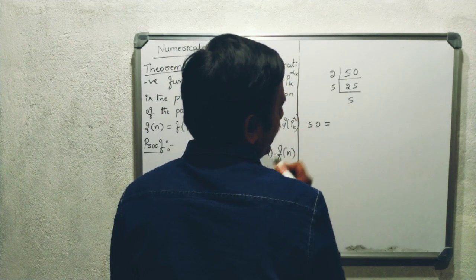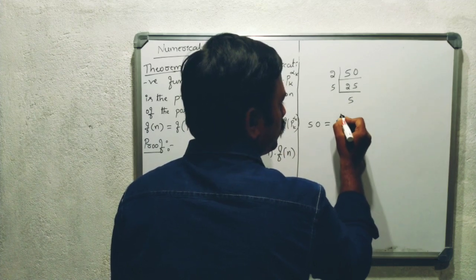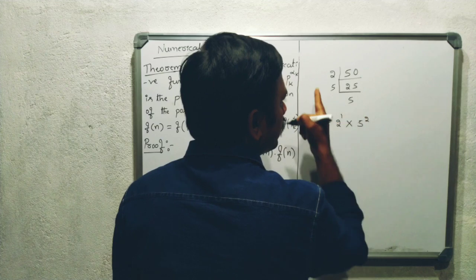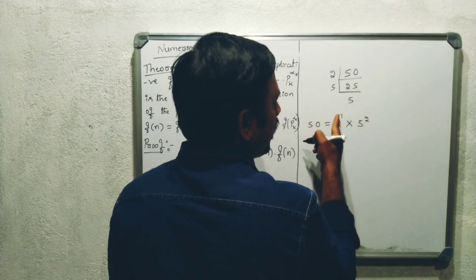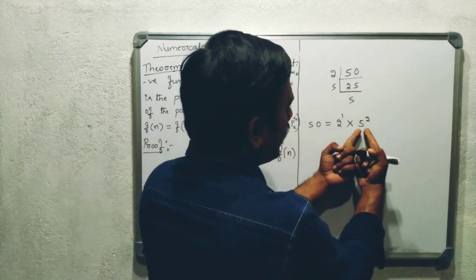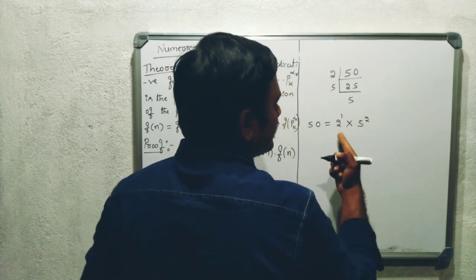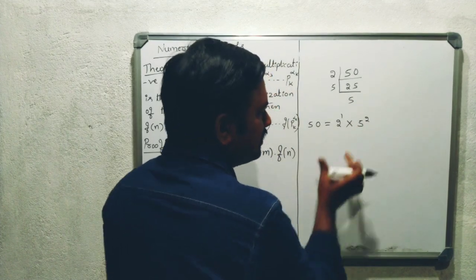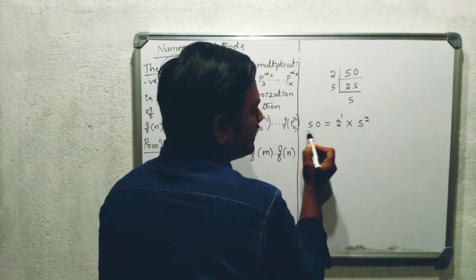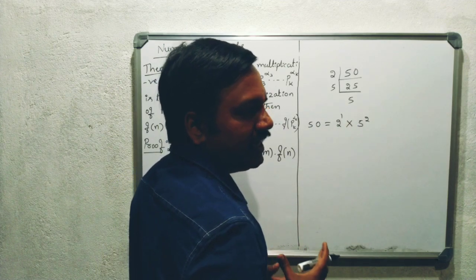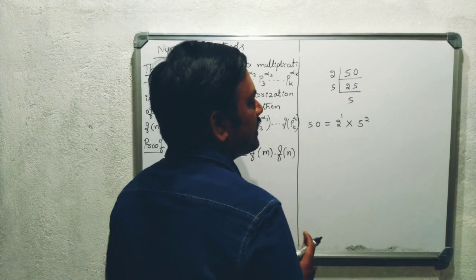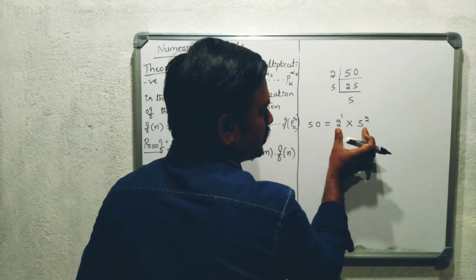So 50 can be written as 2 to the power of 1 into 5 to the power of 2. Since 2 appears once, we write 2 to the power 1. Since 5 appears twice, we write 5 to the power 2. This gives 50. This is the prime factorization. 50 is a positive integer represented as a prime power factorization.